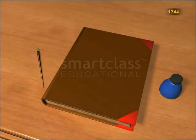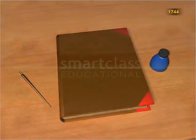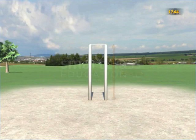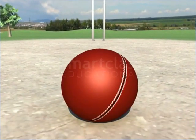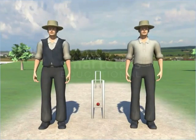In 1744, the first laws of cricket were written. These laws specified that the height of stumps must be 22 inches separated by 6-inch long bails. These laws also specified the weight of the ball and assigned two umpires to settle all disputes during a match.